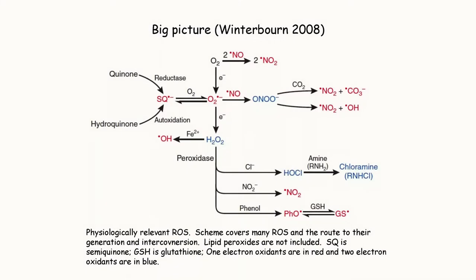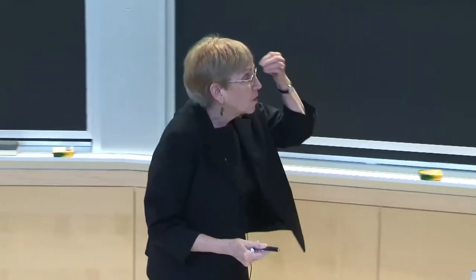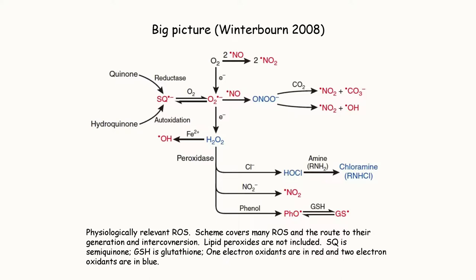What I want to do is proceed where we left off. We're in module seven on reactive oxygen species. I'm introducing the concept and the big picture. At the end of the last lecture, I gave you a few introductory slides. We're going to be focusing on oxygen, which can be one-electron reduced to superoxide. Superoxide can pick up another electron with a couple of protons to form hydrogen peroxide.